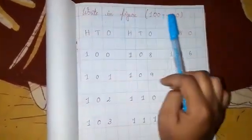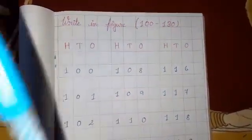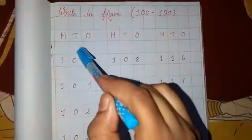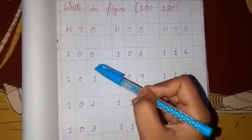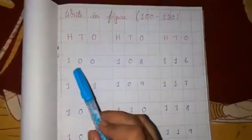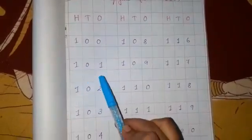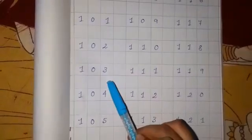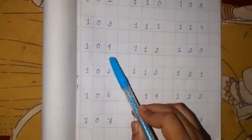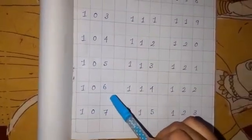First we will write the heading. Then we will give one line gap. Then again we will write H T O. Okay, then give one box gap, then you will start writing. And between two numbers you will give one box gap: 100, 101, 102, 103, 104, 105, 106, 107.